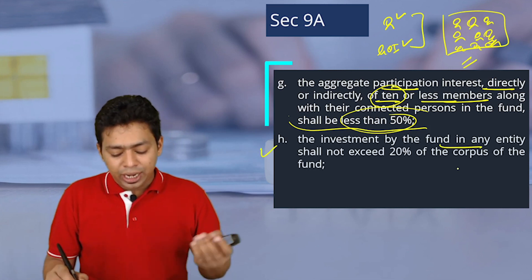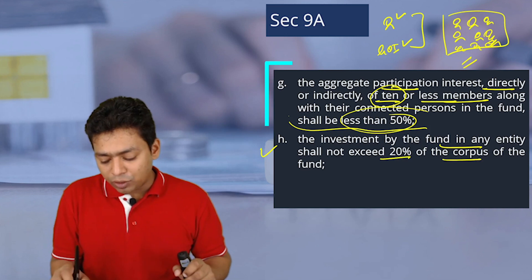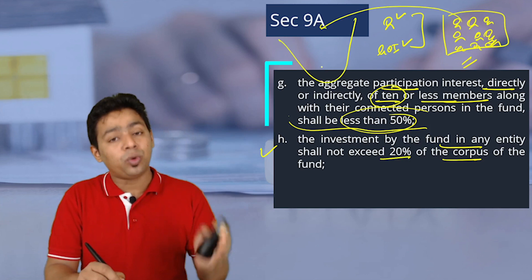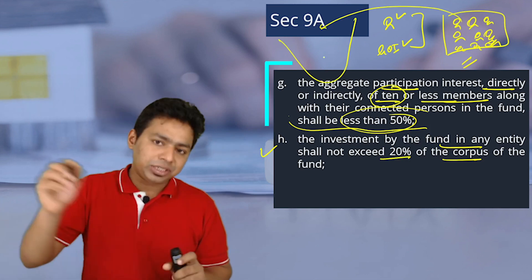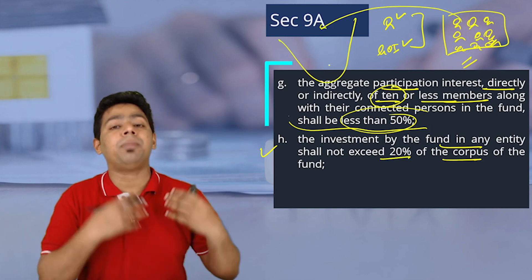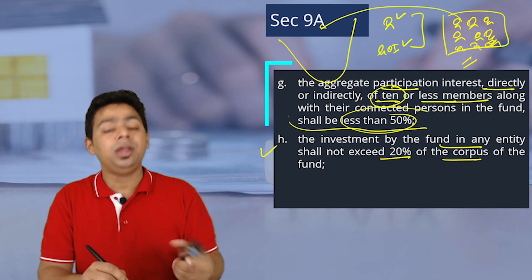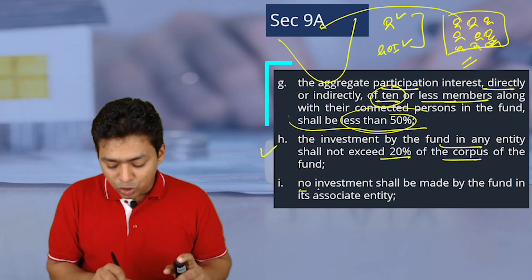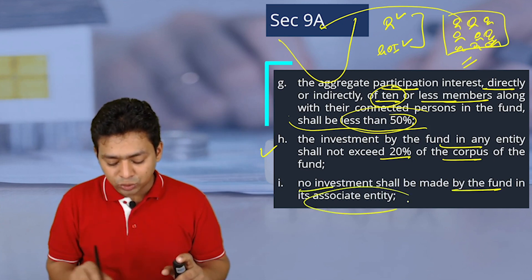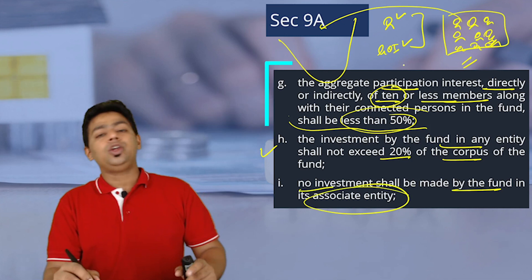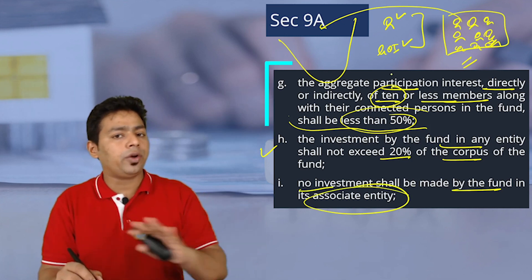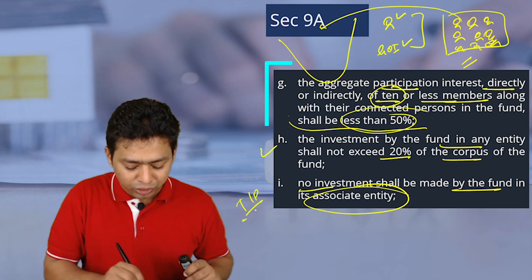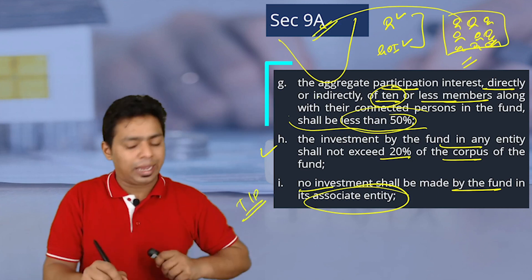The investment by the fund in any entity shall not exceed 20% of the corpus — meaning when investing in India, you should invest in multiple companies, not more than 20% stake in any single company like Reliance or Tata. No investment shall be made by the fund in an associate entity or related party; otherwise it will look like manipulation, transfer pricing provisions would apply, and you will not get the concession of Section 9A.